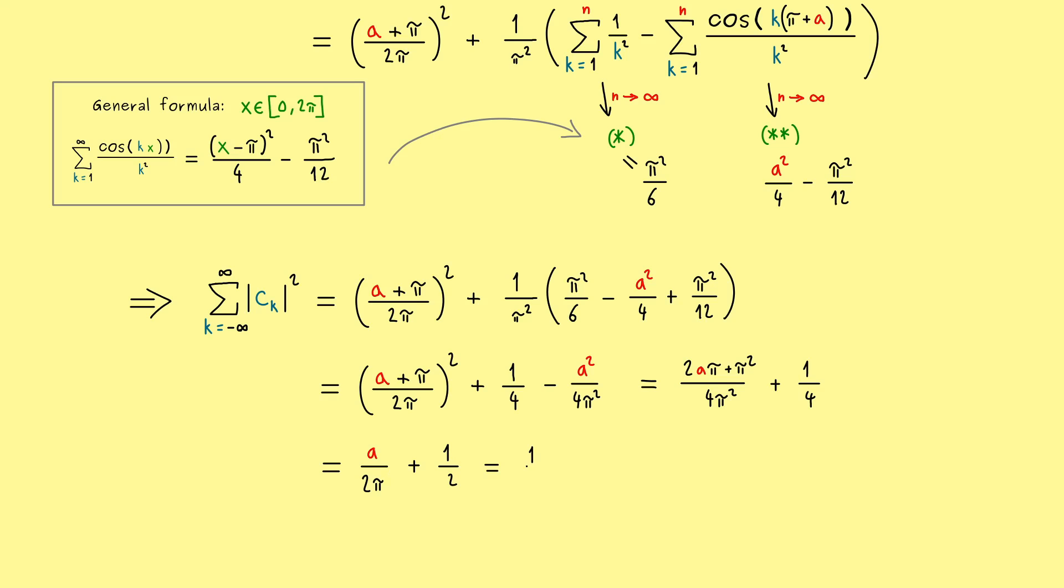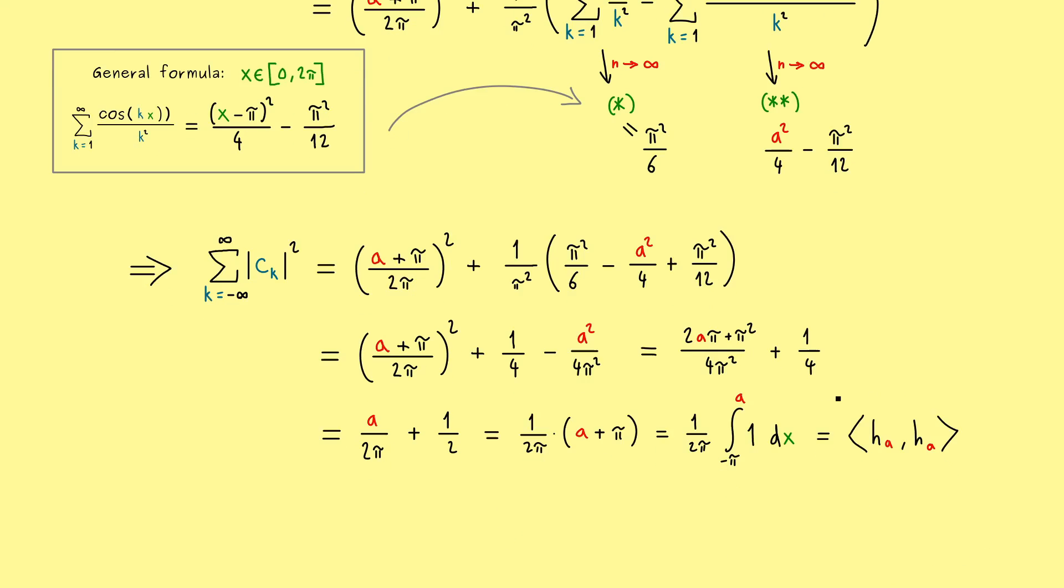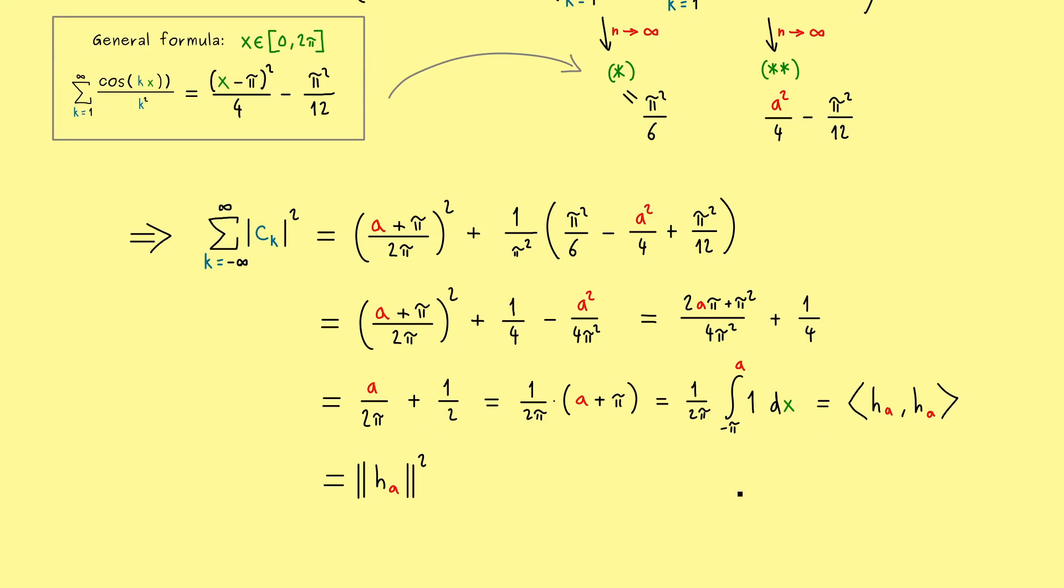And there we can cancel some things again. And then we get 1 quarter plus 1 quarter. And the other term is a divided by 2π. So we have that plus 1 half. And now one nice way to write it would be 1 divided by 2π times (a plus π). Because then you could say this is simply the integral from minus π to a of the constant 1. And there you see with the factor in front this is exactly how we have to find the inner product. Indeed it's the inner product h_a with h_a. And there we know this is exactly the norm of h_a squared. So we get that for h_a, no matter what a is, Parseval's identity holds.